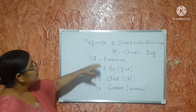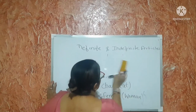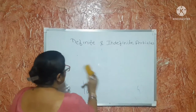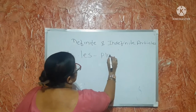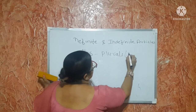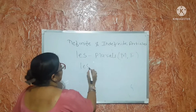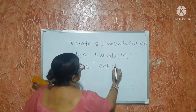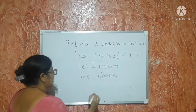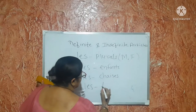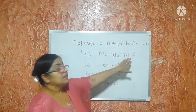After that, we will learn 'les' — L-E-S. Les is used with plurals and for both masculine as well as feminine. For example, 'les chaises' — chaises means chairs. 'Les tables' — tables means tables. This is the way to write plurals with masculine and feminine.